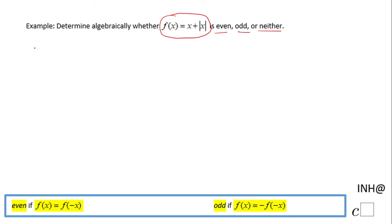For this function x + |x|, I'm going to use the number 2. I'm going to evaluate the function at 2. So f(2) = 2 + |2| = 2 + 2 = 4.